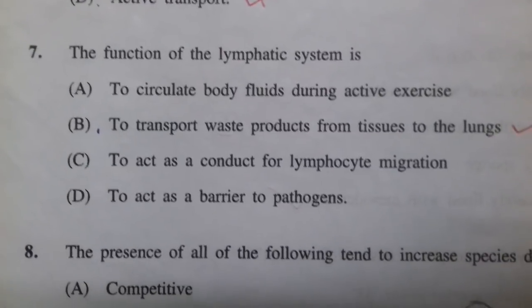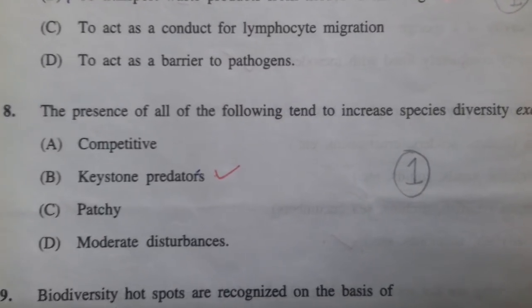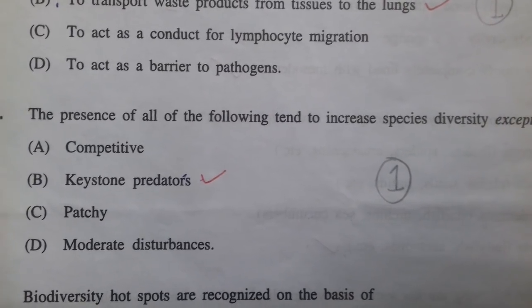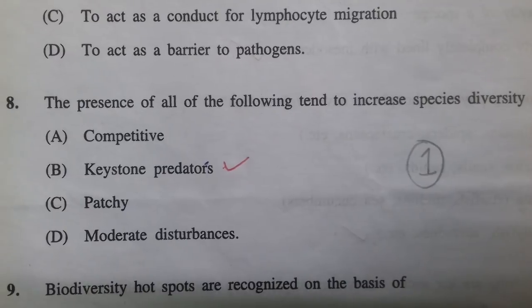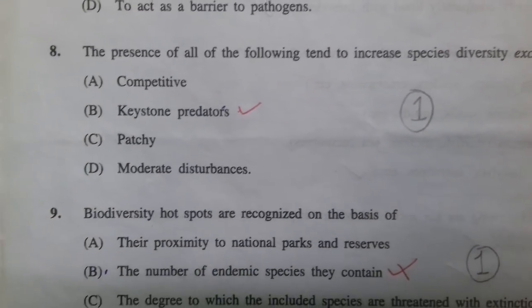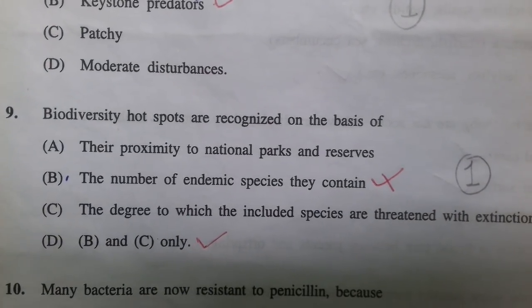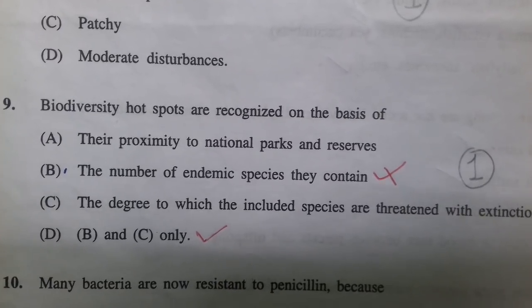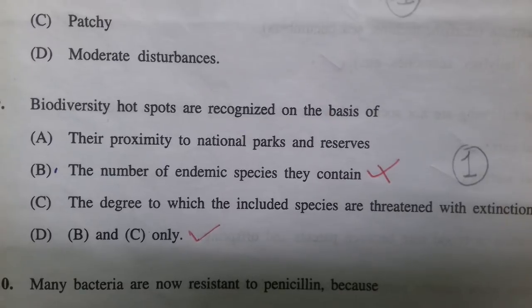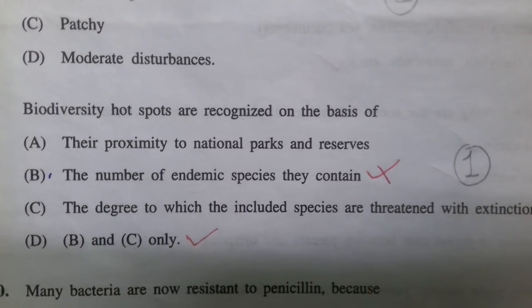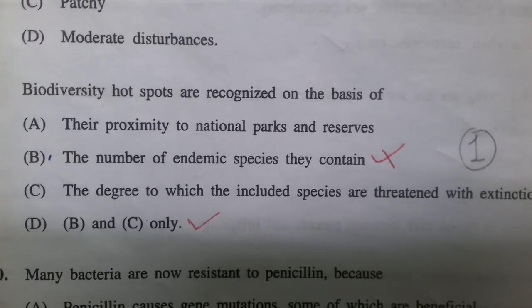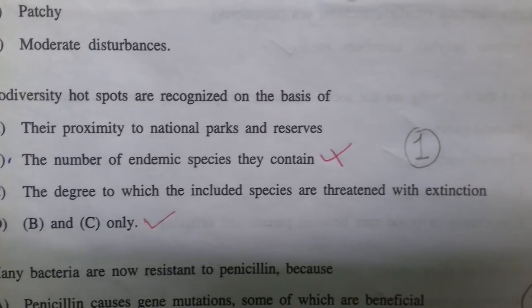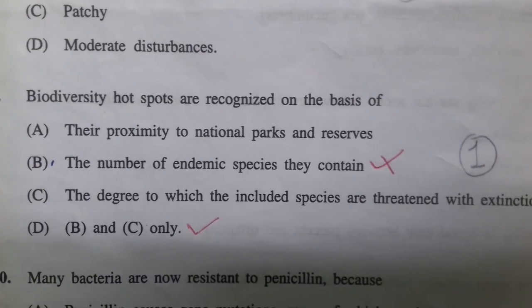Question eight: the presence of all the following tends to increase species diversity except keystone predators — when studying ecology in zoology, you'll be able to answer this correctly. Question nine: biodiversity hotspots are recognized on the basis of the number of endemic species they contain, and the degree to which those species are threatened with extinction also matters a lot.